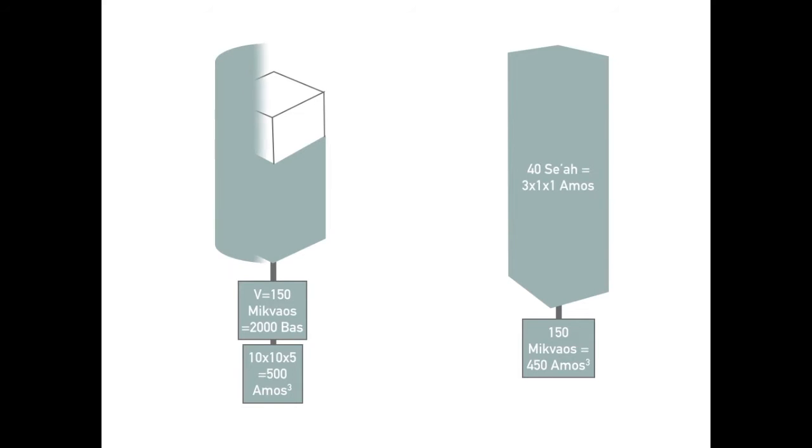So what if the Yam Shel Shlomo was round? Would that make a difference? Actually, it would make things worse. Now the volume is pi times the radius squared times the height. Rounding pi at 3, this is 3 times 5 squared times 10, or 750 cubic amos.